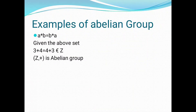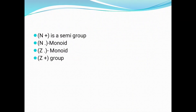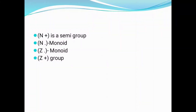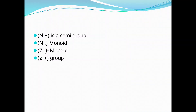Next, some results for group and abelian group. (N, +) is a semi-group. (N, ·) is a monoid. (Z, ·) is a monoid. (Z, +) is a group. Why is (N, +) only a semi-group? Because (N, +) contains only closure and associative properties. (N, +) does not contain identity and the inverse element. So (N, +) is a semi-group.